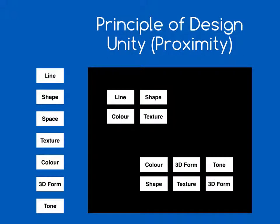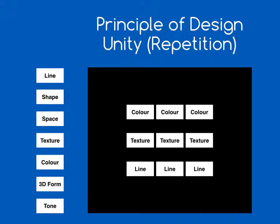Unity is shown in two different ways. First, unity by proximity: the group of four at the top and the group of six at the bottom are very close to each other, showing these objects belong together and form separate groups. Second, unity by repetition: by repeating one element over and over again, we achieve unity. Here we have three lines made up of different elements, showing repetition — giving unity to the design by repeating the same style or elements.